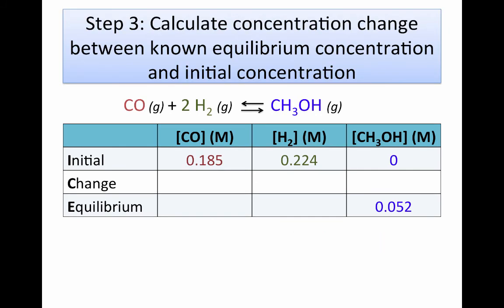Now we calculate the concentration change for the species where we have both initial and equilibrium concentrations, which in this case is our product, methanol gas. We started with zero and ended with 0.052 molar, so we have a change of plus 0.052 molar.